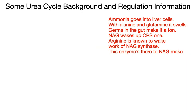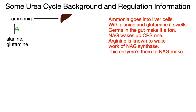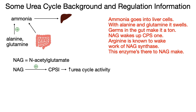Ammonia goes into liver cells, with alanine and glutamine it swells. Germs in the gut make it a ton. NAG wakes up CPS1.